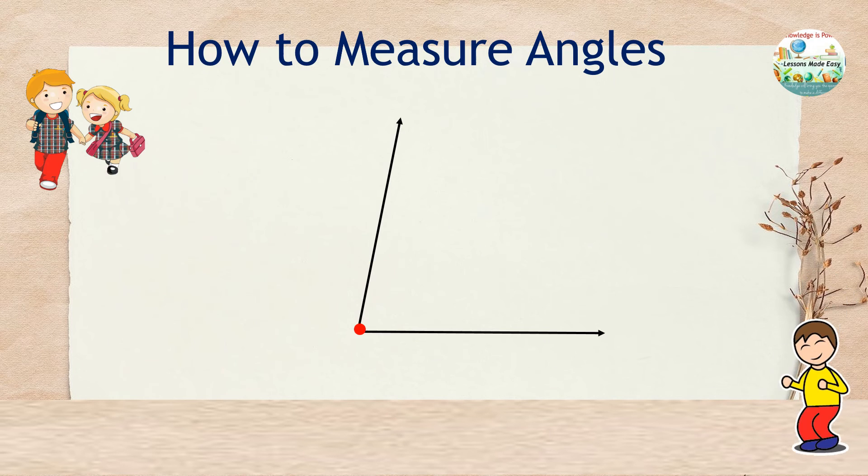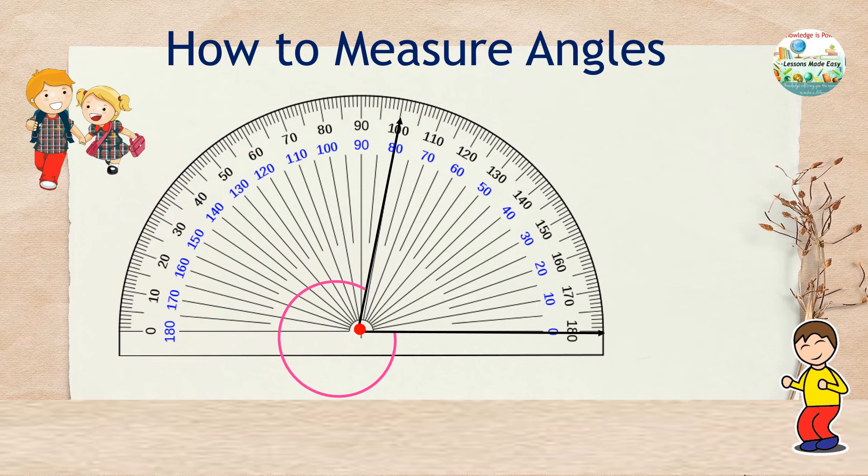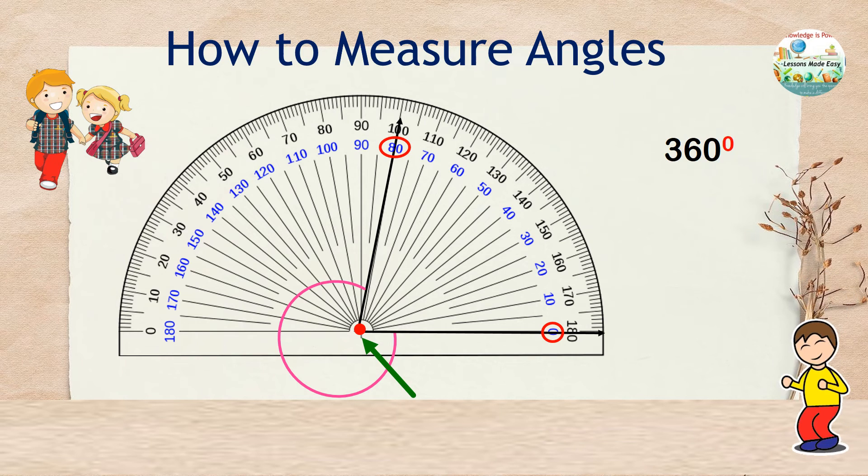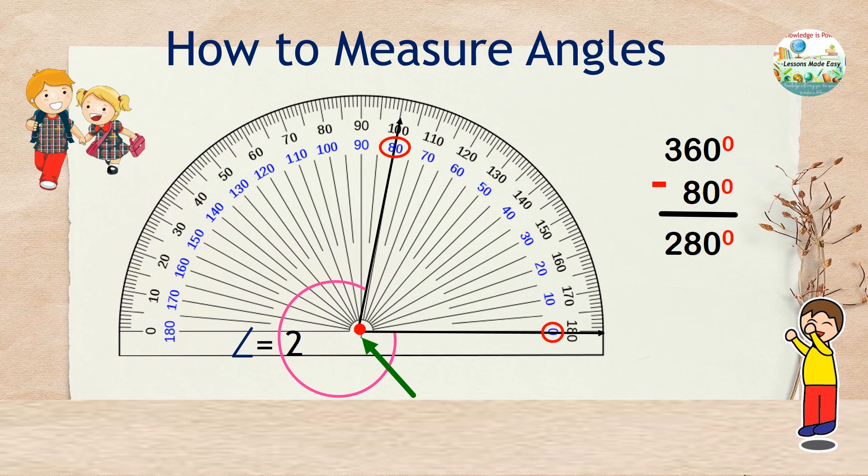Let's do the last one. Measure this unknown angle. This angle appears to be more than 180 degrees. So it is better to measure the smaller one instead. Take the protractor and place the midpoint over the vertex. Locate 0 degrees and measure the size of the angle, which appears to be 80 degrees. So from 360 degrees minus 80 degrees, we still have left 280 degrees. Therefore, the size of the unknown angle is 280 degrees.